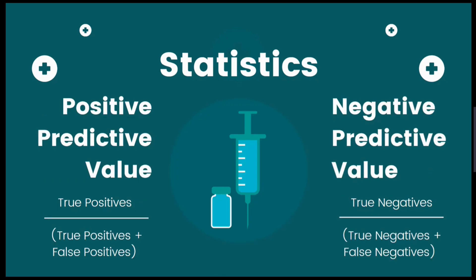Next, we have the positive and negative predictive values. This is used to calculate the percentage of how many people with a disease had a positive test and how many without the disease had a negative test. To calculate the PPV, you will need to divide the true positives by the combined total of true positives and false positives. For the NPV, this will be true negatives divided by the combined total of true negatives and false negatives.